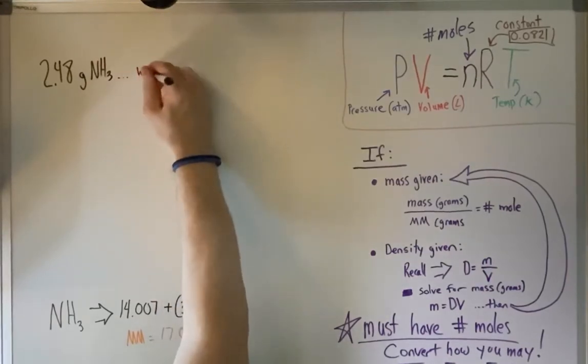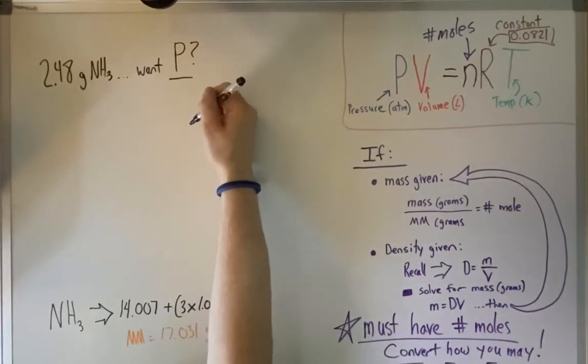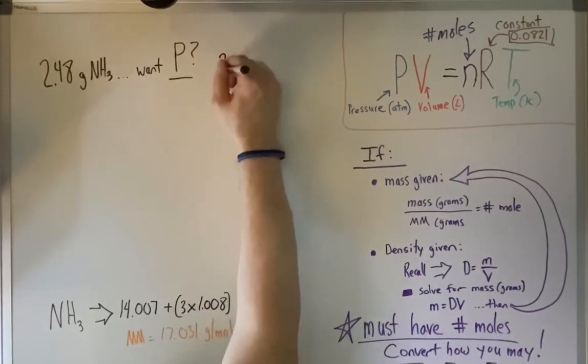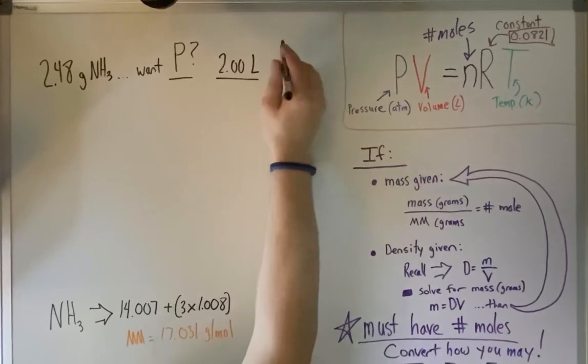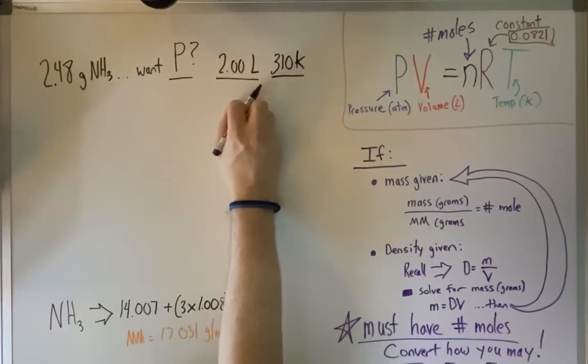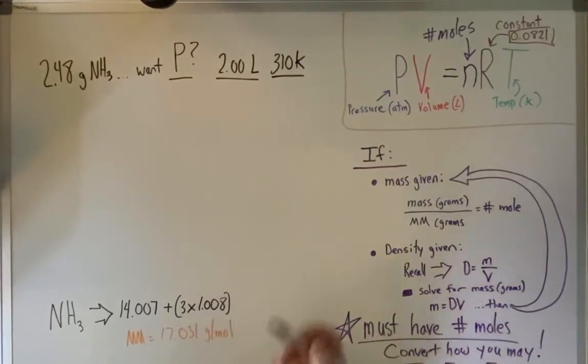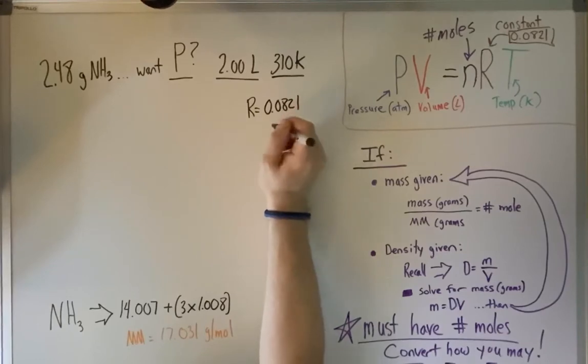You want to know the pressure. So pressures are a thing. So we're given a volume. Our volume is going to be a 2-liter bottle. So 2 liters. We'll make the temperature room temperature again. So we're going to go about 310. So we're missing pressure. We'll be given grams. So essentially, when we have the constant, so our constant again, R is going to be equal to 0.0821. So we have that.